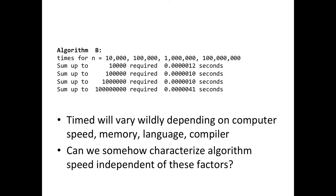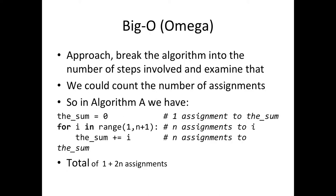So how are we going to characterize an algorithm without regard to the speed of the computer? This is where we introduce what's called Big-O or Omega notation. The approach is to break the algorithm into a number of steps involved and examine that. Rather than looking at it as a computer, let's look at the actual algorithm.